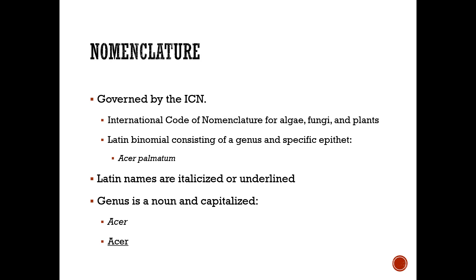This system is governed by the International Code of Nomenclature for algae, fungi, and plants. A Latin binomial consists of a genus and a specific epithet — for example, Acer palmatum for Japanese maple. Latin names are either italicized or underlined. The genus is a noun and is capitalized.